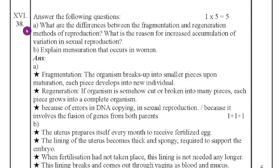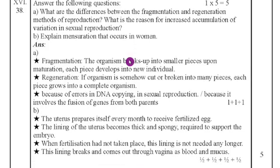Last main answer the following questions here. One question will be there. 5 marks question. What are differences between the fragmentation and regeneration method of reproduction? What are the reasons for increasing the accumulation of variation in sexual reproduction? Explain menstruation that occurs in women? Both also answer also I have given. You have to practice children. Practice thoroughly and get good marks in the final exam. And all the best for your exam.